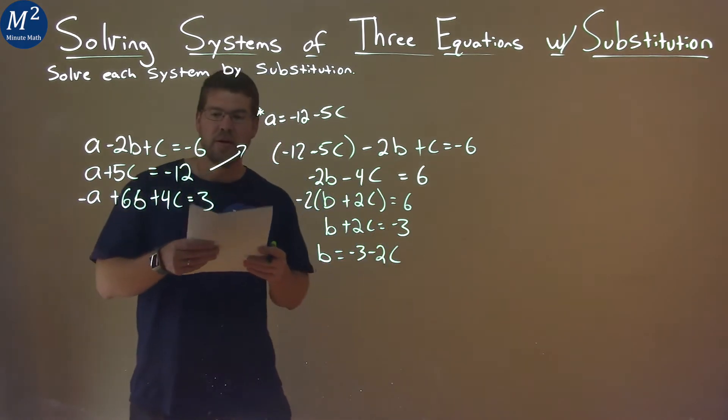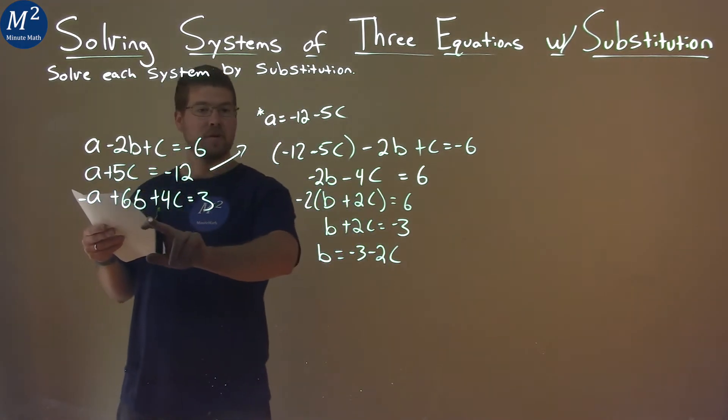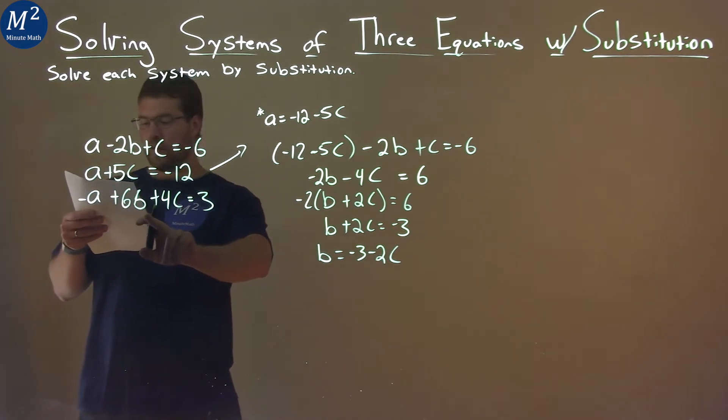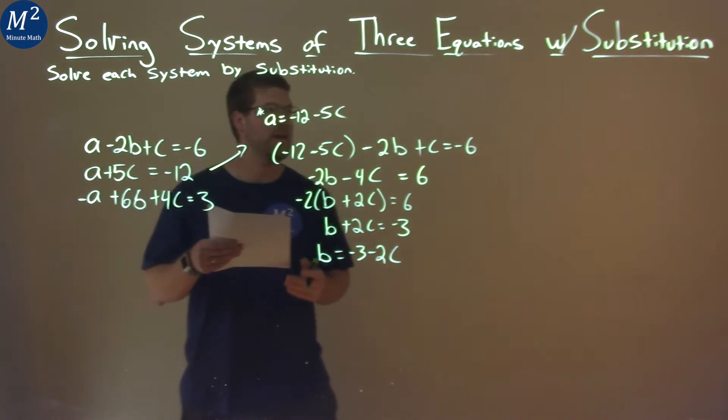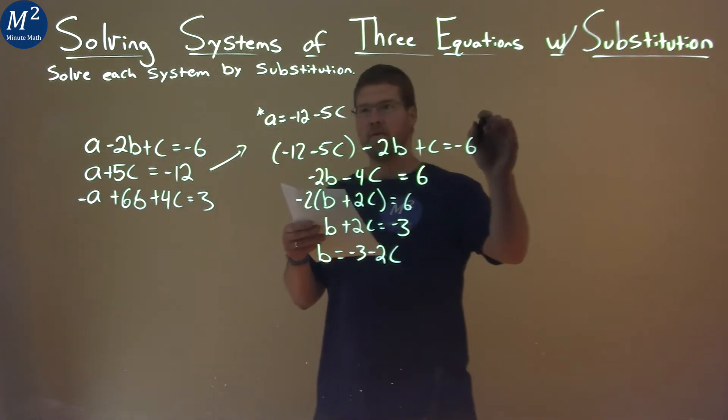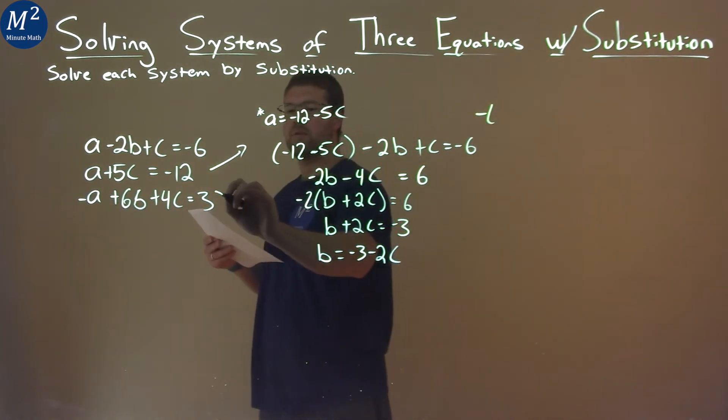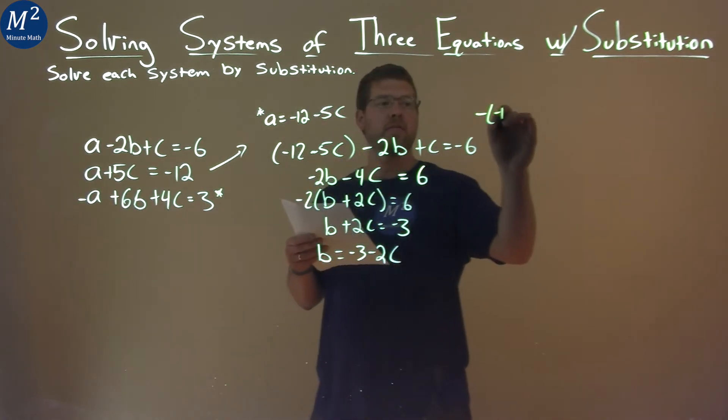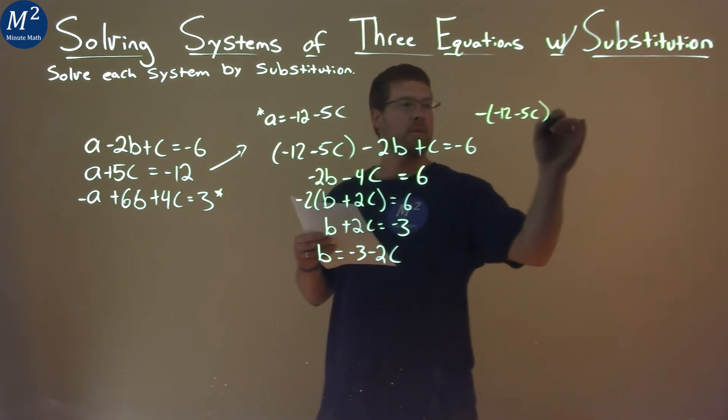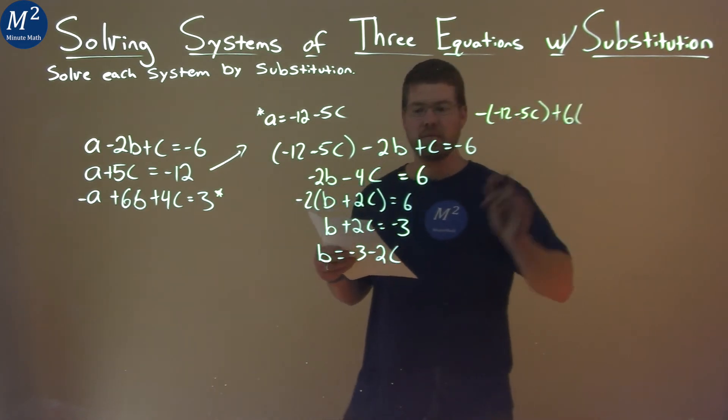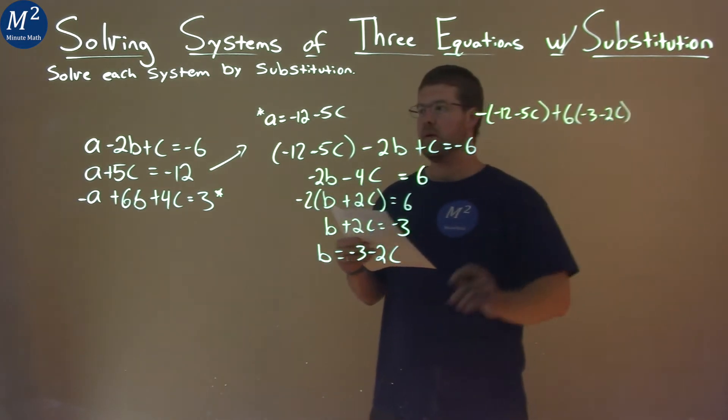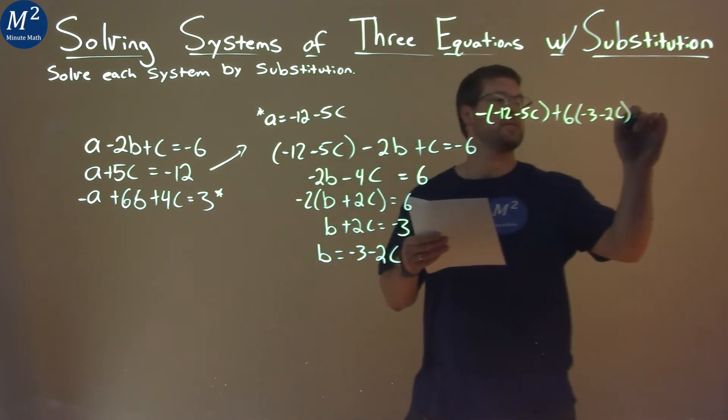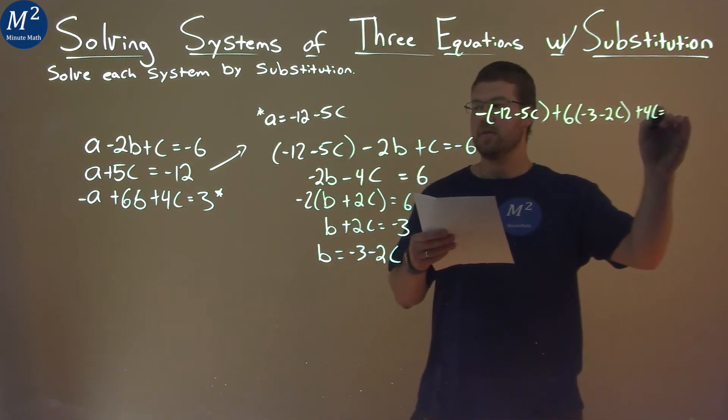Well, what we now can do is we're going to look at our last equation, and we're going to plug in what we know for A as well as B here, to get it just in terms of C and to simplify. So, I'm going to fit that over here, my last equation. We have a negative, and then, so the A, we have negative 12 minus 5C plus 6 times B, which is what we just found, negative 3 minus 2C, plus 4C equals 3.